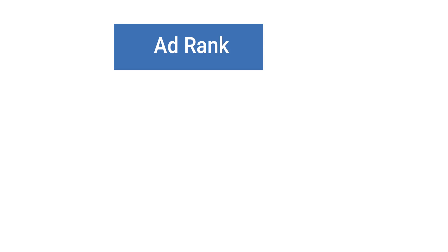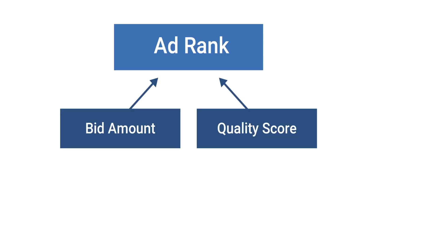Ad rank is calculated based on your bid amount and quality score. All advertisers, regardless of their wealth, would love to pay less for the same ad exposure, so it's important to understand how you can earn as high a quality score as possible.